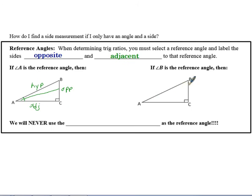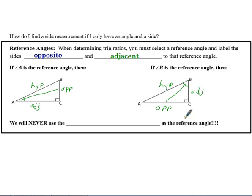What if we had the same triangle but used B as the reference angle? The hypotenuse is still the hypotenuse — it's still across from the 90-degree angle, that didn't change. But now side AC is opposite angle B, and side BC becomes the adjacent. When we move the reference angle, the opposite and adjacent switch places, but the hypotenuse always stays the same. When picking your reference angle, you're never going to pick the right angle.